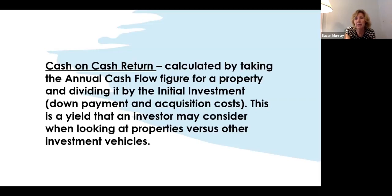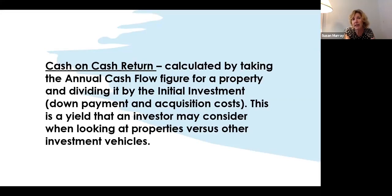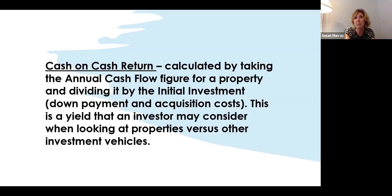Cash-on-cash return basically tells you your percentage return on your money. You take the annual cash flow — which is at the bottom of our sheet — and divide that by the money you have into it, which is both the down payment plus the acquisition costs, generally closing costs. That gets the yield that an investor can consider as part of figuring out if it's a good return, or whether they could do better with another investment vehicle.